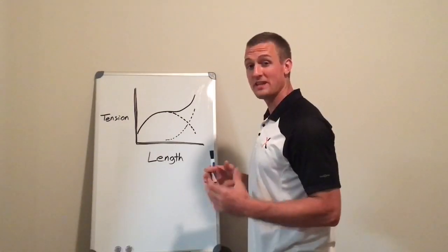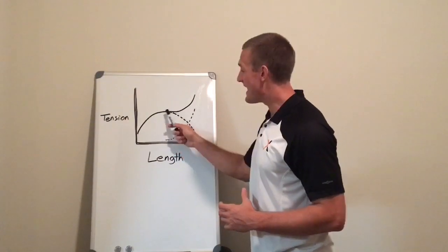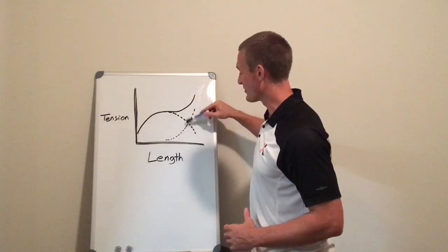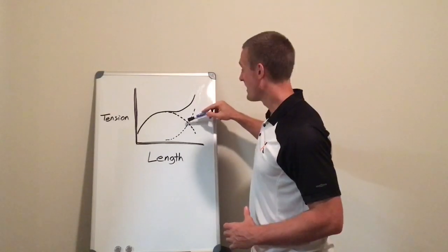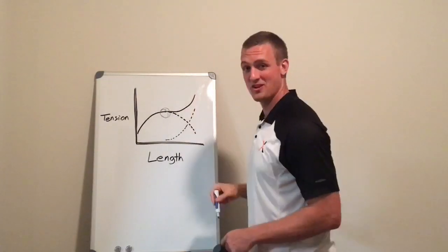So in full knee flexion my quadriceps have minimal passive tension and a lot of active tension. I cannot possibly be operating over here on this curve. Realistically I'm probably operating near the peak active tension up here.